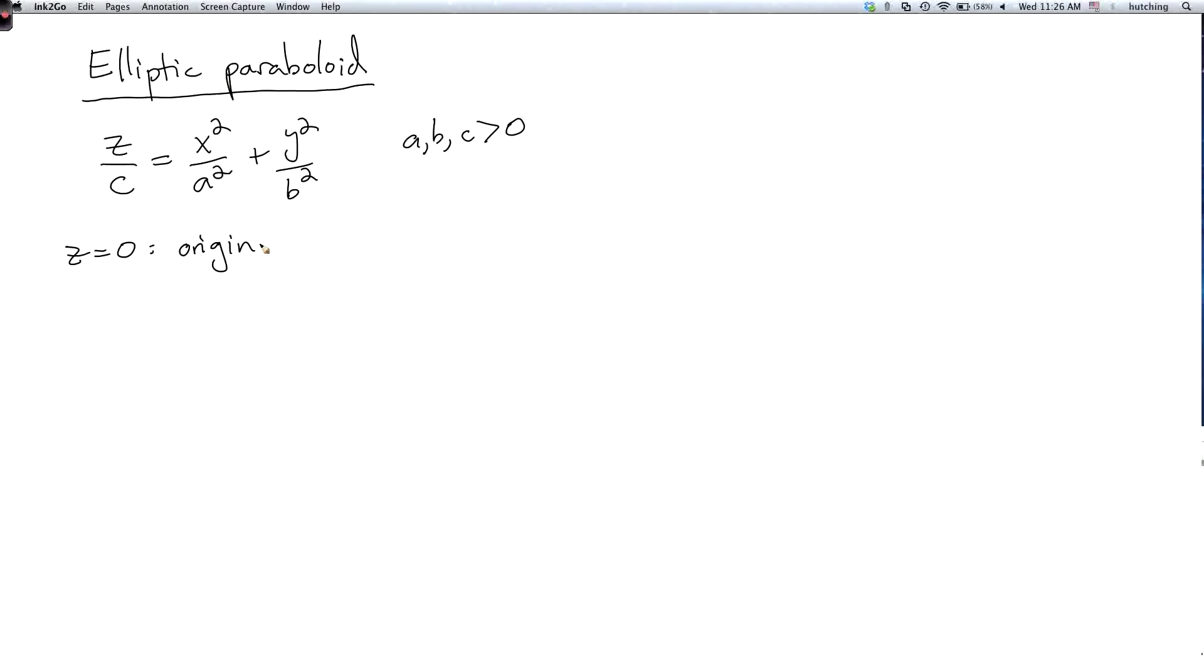It's more interesting to look at other horizontal slices. So if we set z to be a constant which is positive then we get an ellipse in the xy plane, or in the xy plane translated up by c.